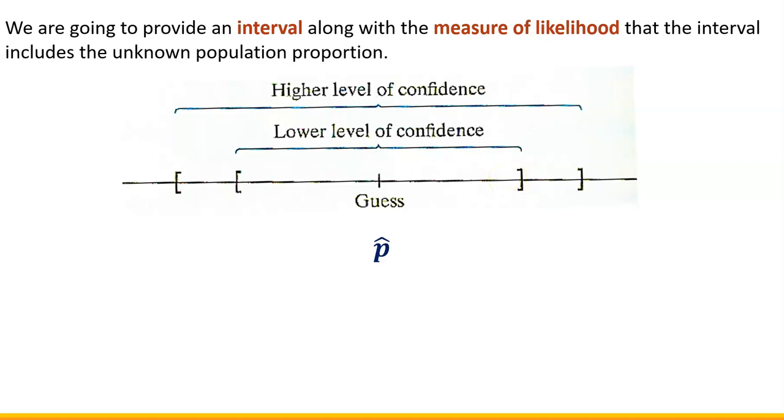But how do we find that interval? Well here's the formula. We're gonna start with a sample proportion and then we're gonna subtract a certain quantity and then add that same quantity. That's how we'll obtain the interval. Now what is that quantity that we're going to be adding and subtracting? Well its formula is written right here. And you should be able to recognize some parts of that formula.